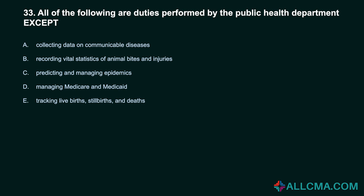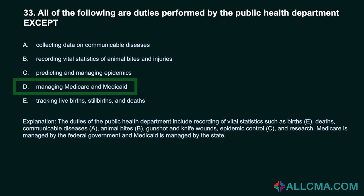Question 33: All of the following are duties performed by the public health department except: A. Collecting data on communicable diseases. B. Recording vital statistics of animal bites and injuries. C. Predicting and managing epidemics. D. Managing Medicare and Medicaid. E. Tracking live births, stillbirths, and deaths. Correct answer: D. Managing Medicare and Medicaid. The duties of the public health department include recording vital statistics such as births, deaths, communicable diseases, animal bites, gunshot and knife wounds, epidemic control, and research. Medicare is managed by the federal government and Medicaid is managed by the state.